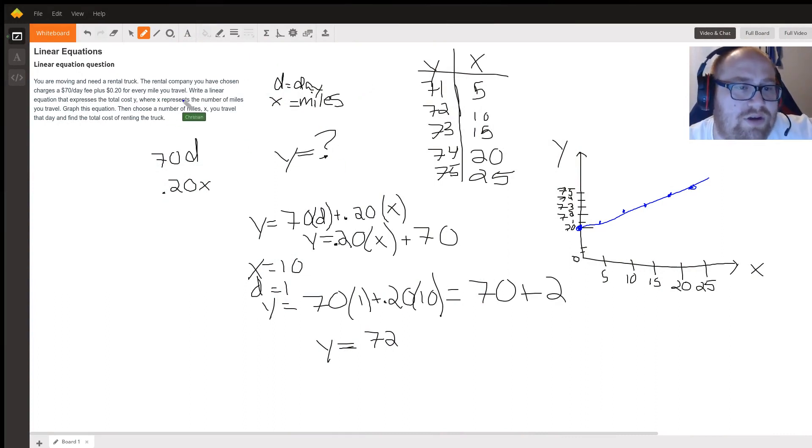We have a problem. The rental company you have chosen charges $70 a day, so $70 is just a straight up one day cost of $70, plus 20 cents for every mile. So 0.20 times x where x is the miles. Write a linear equation that expresses the total cost y, so y equals what?